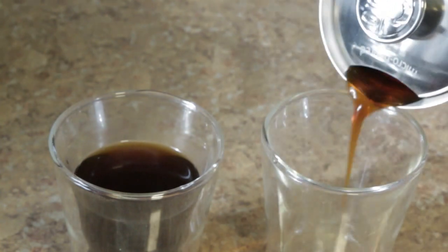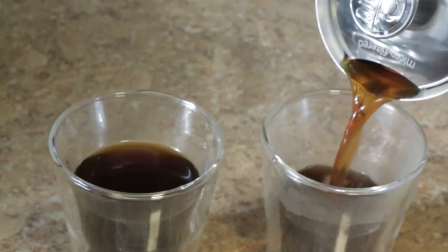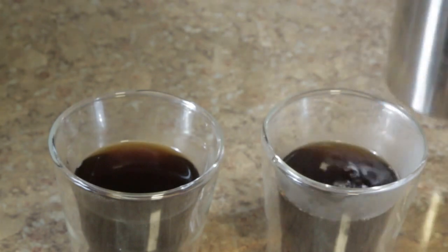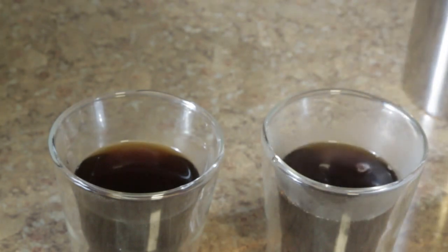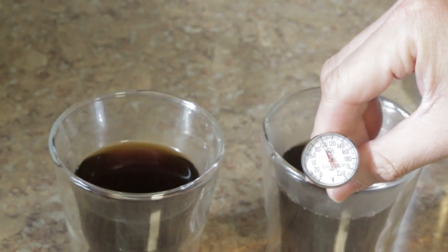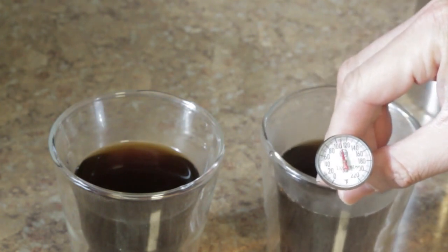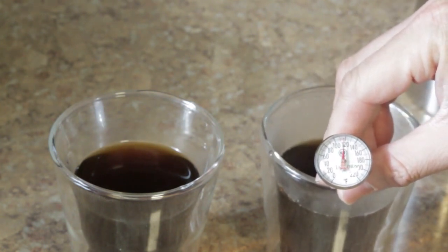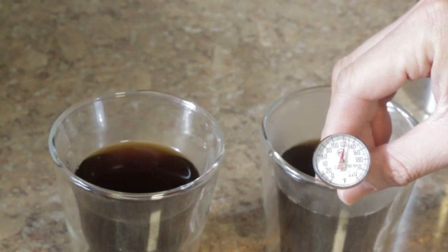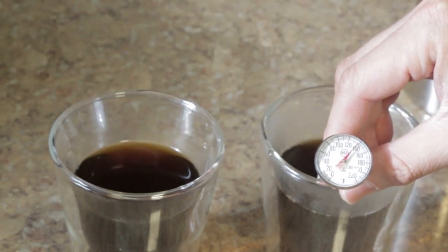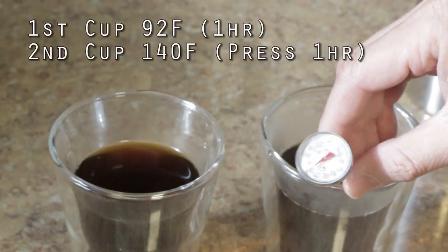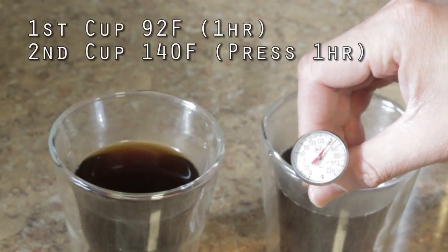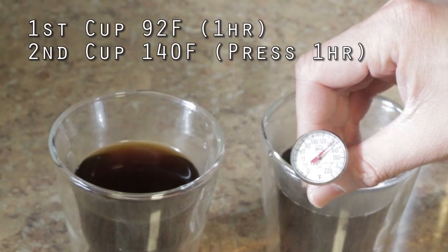As you see, the insulation still works. The coffee coming out is still hot. And let's get a temperature reading here. 140 after an hour in the press pot. Pretty good. This is like drinkable temperature.